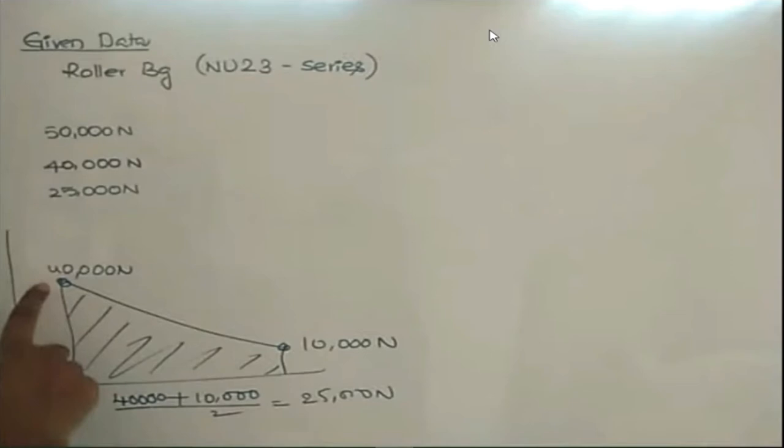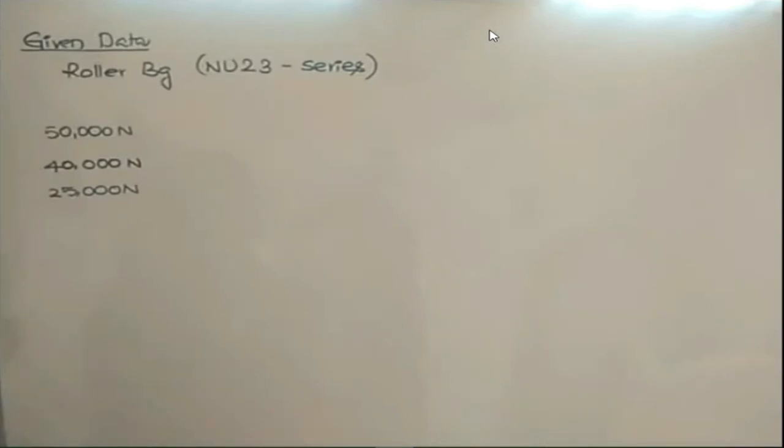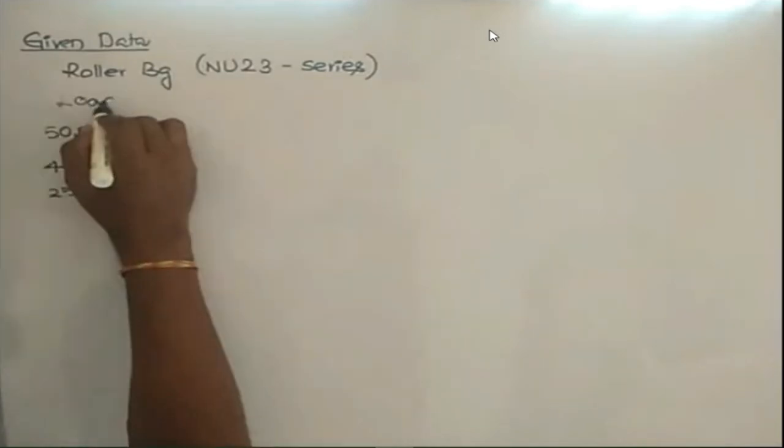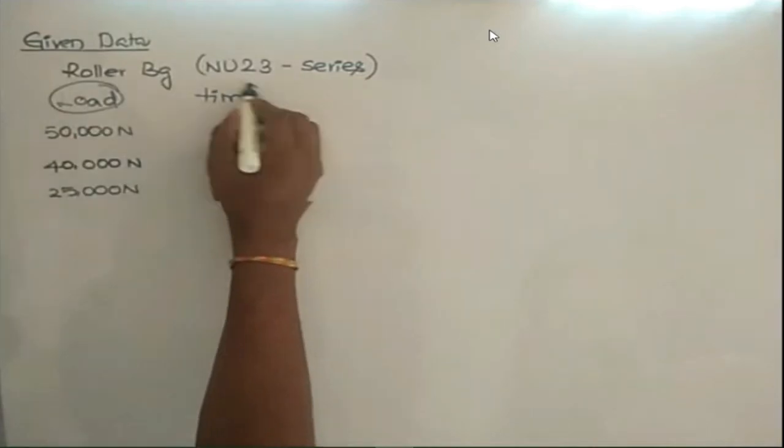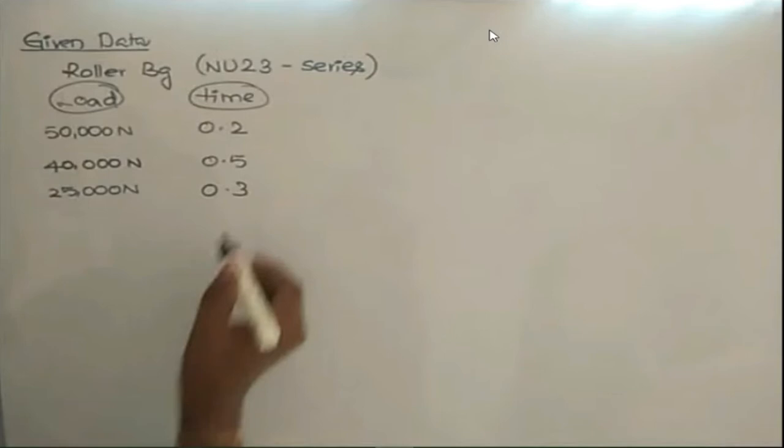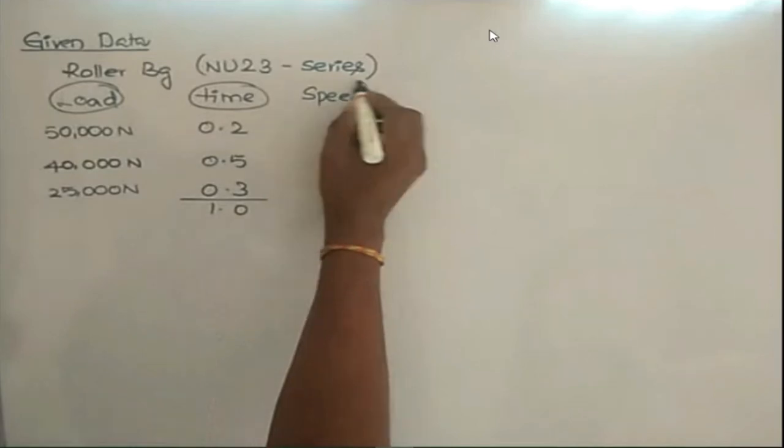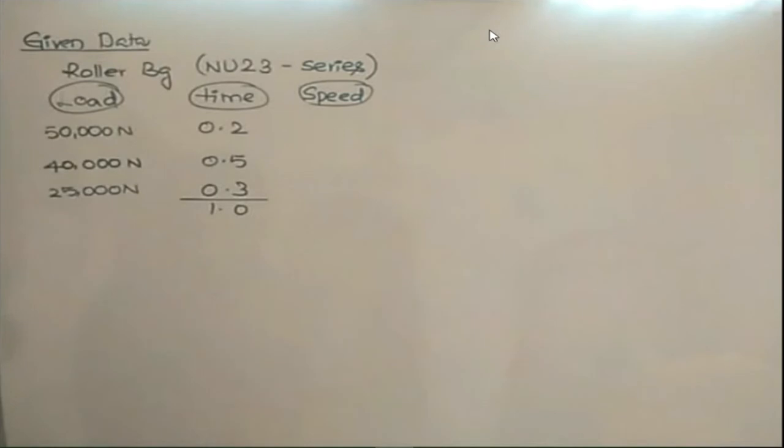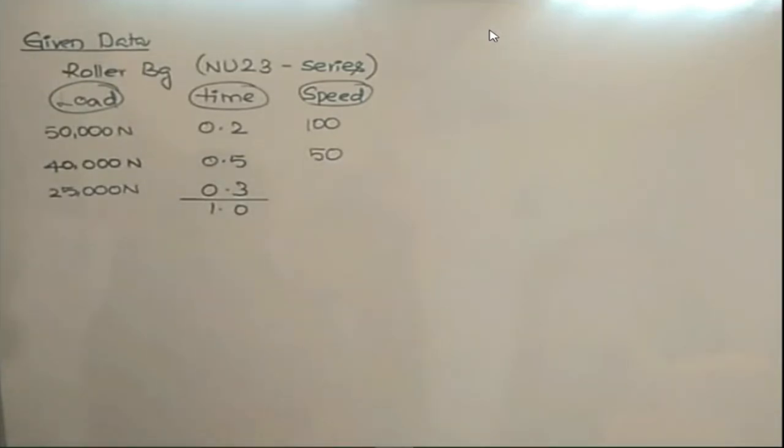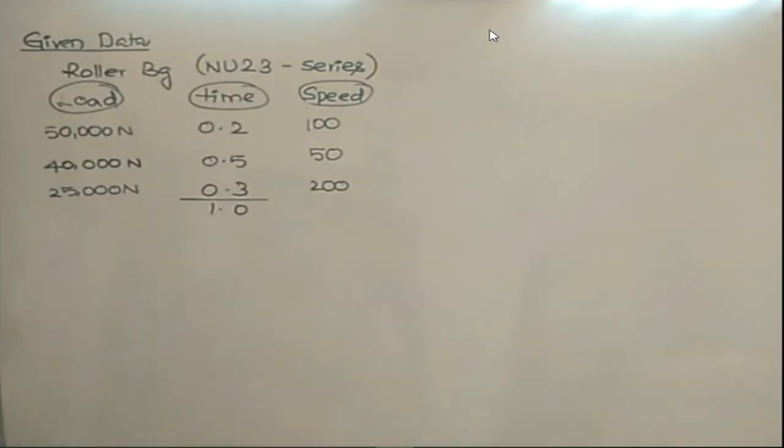Now here what is the RPM values? 50,000 newtons - what is the time, load, then time? First 20%, then next 50%, what about the remaining? Total must be 1. Then speed is equal to - what is the speed value? 100 RPM, 50 RPM. Then what about the rest of the time? 200 RPM.